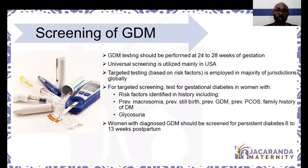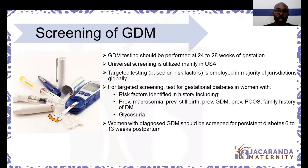With targeted screening, you identify women at higher risk of developing gestational diabetes and test those. Risk factors to remember include previous macrosomia, previous stillbirth, family history of diabetes, and medical issues like polycystic ovarian syndrome. Even if someone is diagnosed with gestational diabetes and it resolves post-pregnancy, some patients may go on to develop overt diabetes and should be screened again six to thirteen weeks after delivery.